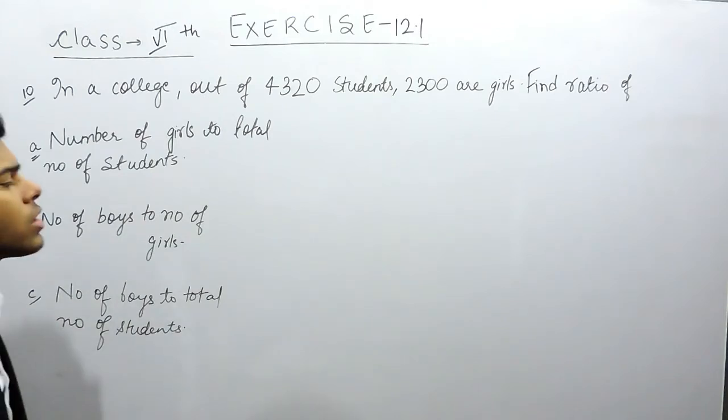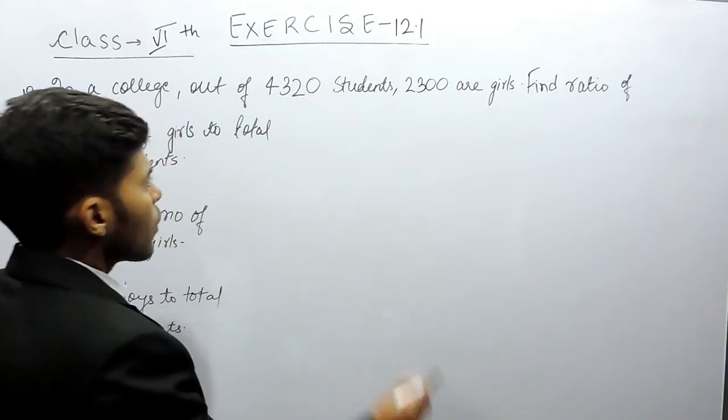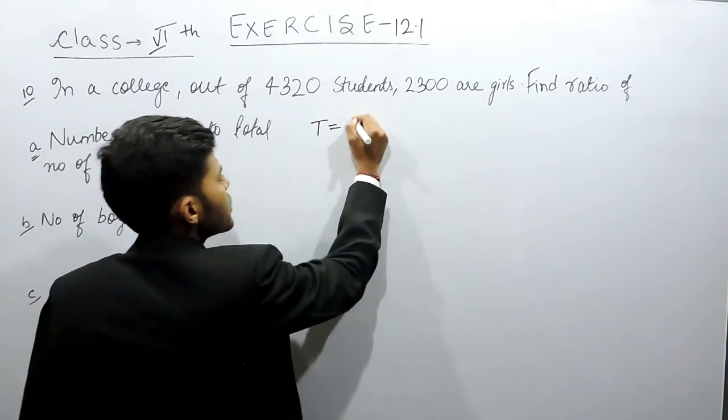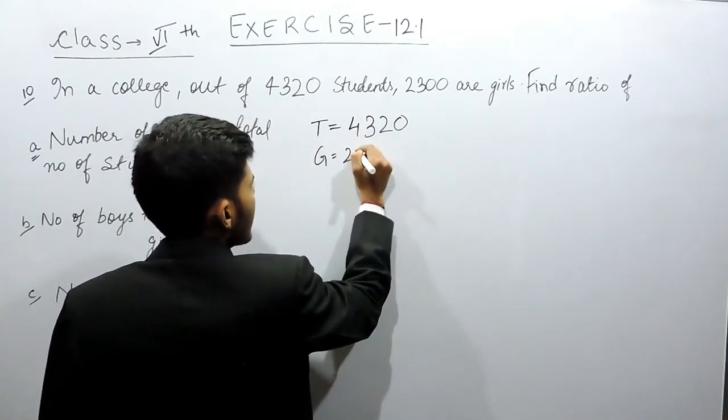We are being given the total students and the number of girls, so we can find the number of boys: total minus number of girls. So, total is equal to 4320, girls 2300.